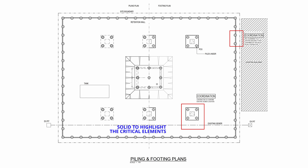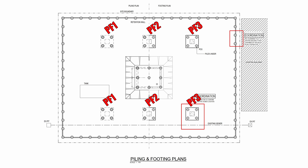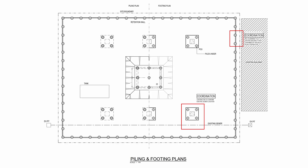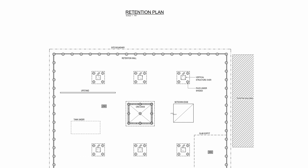On the footing plan side, the dashed lines shown on the piling plan are now solid, as the pad footings are the critical point of this drawing. You may call up different pad footings — PF1, PF2, PF3 — as they may have different reinforcement, and you'll also show the depth and breadth of the pile caps. The columns also become more prominent on the footing plan, as you'll need to put additional starter bars out and may call up a column schedule to find out what starter bars need to come out of the pile caps.